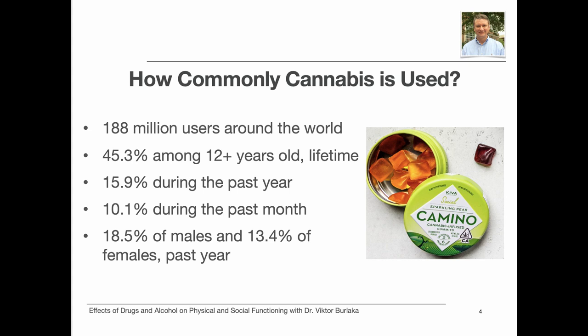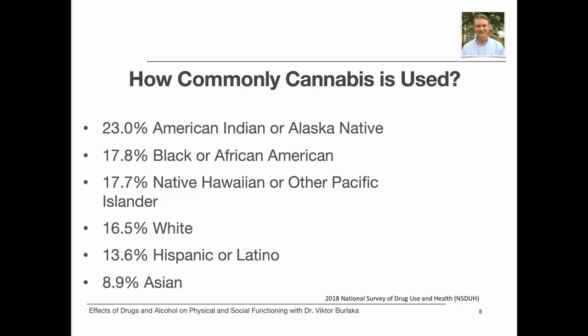How commonly is cannabis used? Other than alcohol, cannabis continues to be the most widely used psychoactive substance in the world. An estimated 188 million individuals used cannabis in 2017. 45.3% of individuals over the age of 12 years have used marijuana during their lifetime, 15.9% during the past year, and 10.1% during the past month. Data suggest that marijuana use is more common among men than women — past year use was reported by 18.5% of males and 13.4% of females among persons aged 12 and older. The highest rate of cannabis use is reported by individuals identifying as American Indian or Alaska Native, while Asian individuals report the lowest rate. The vast majority of individuals who use marijuana do not use it daily or almost daily, but almost 8.7 million individuals do so in the United States.